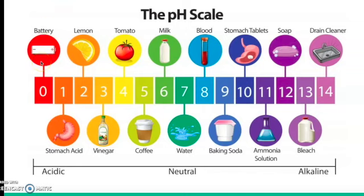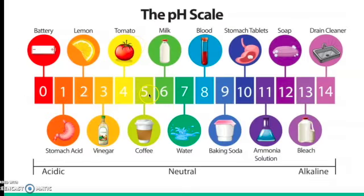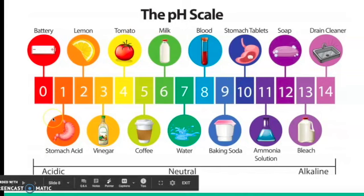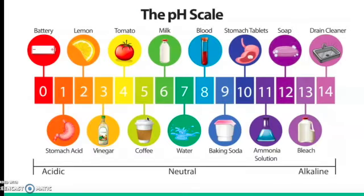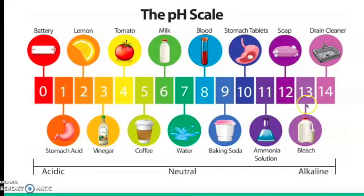On the pH scale, a battery is at pH 0, stomach acid at 1, lemon juice at 2, vinegar at 3, tomato at 4, coffee at 5, milk at 6, and water is our neutral example at 7. Then blood, which is slightly basic, is at 8, baking soda at 9. When your stomach is upset and you take Pepto-Bismol tablets, those are around pH 10 — they're basic because your stomach acid is so acidic, and those tablets help neutralize it. Ammonia solution is at 11, soap at 12, bleach at 13, and drain cleaner — even stronger than bleach — at pH 14.